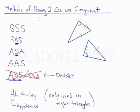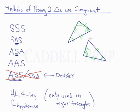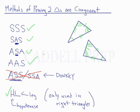To review: two triangles are congruent if everything about them is the same in both triangles. But to prove congruence, we don't have to individually prove each side or angle. We only have to prove SSS, SAS, ASA, AAS, or hypotenuse-leg. If we can use any of these methods, then we know that the two triangles are congruent.